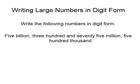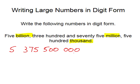Moving on to the next example, we are asked to write 5,375,500,000 in digit form. Our cue words this time are billions, millions, and thousands — they are our cue words to leave a space. So we have 5,375 — leave a space — 500 — leave a space — and we need to put in zeros for our hundreds, tens, and units.